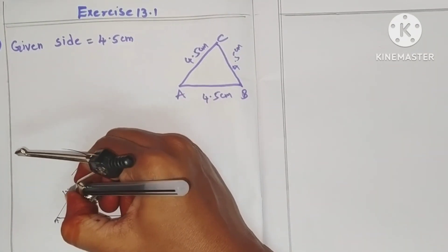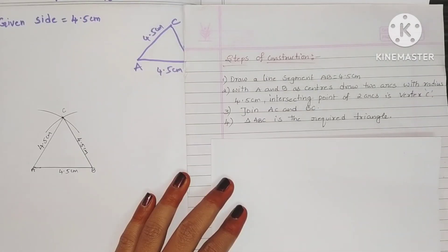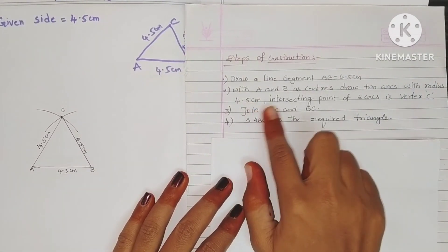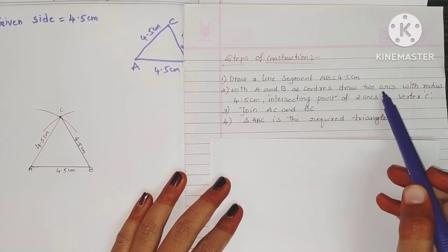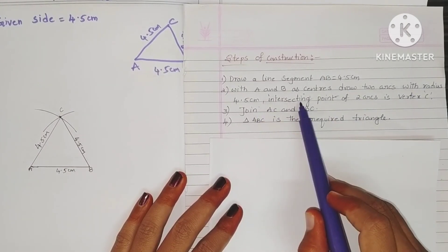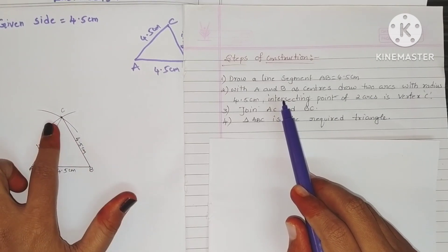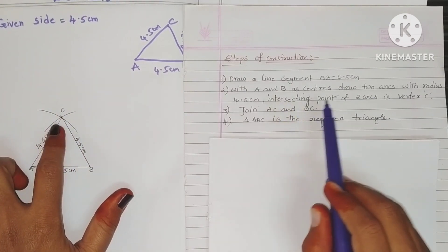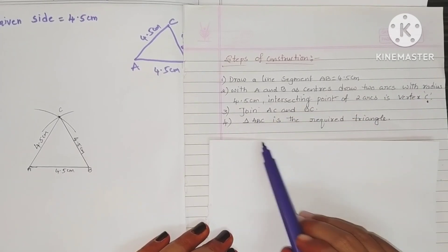This is the required equilateral triangle. Steps of construction: Step 1 — draw a line segment AB equal to 4.5 centimeters. Step 2 — with A and B as centers, draw two arcs with radius 4.5 centimeters. The intersecting point of these two arcs is the vertex C. Join AC and BC.